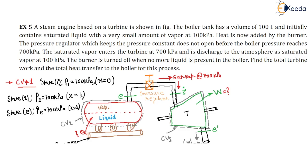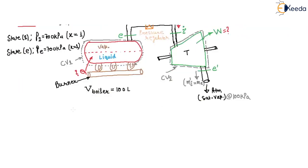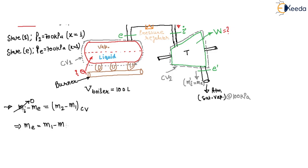The boiler tank initially contains saturated liquid so x = 0. Applying mass balance for the control volume: m_i minus m_e equals m2 minus m1. There is no inlet, so m_i = 0, giving m_e = m1 minus m2.